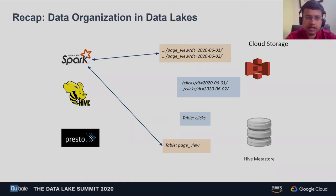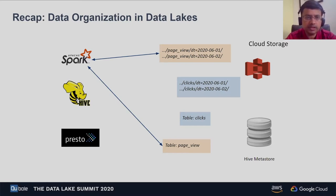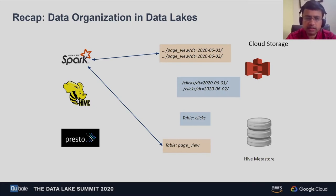Engines like Spark, Hive, and Presto interact with the Hive Metastore to get table metadata. In this picture, Apache Spark asks the Hive Metastore about the location of the page view data, is told that the data lives under a certain path, and then can start processing that data.